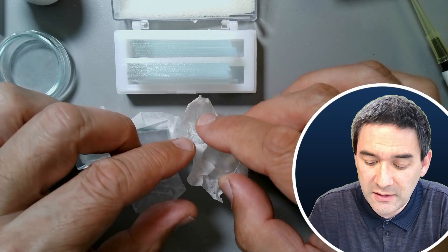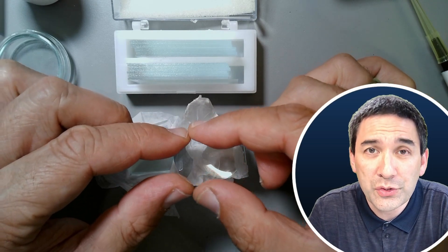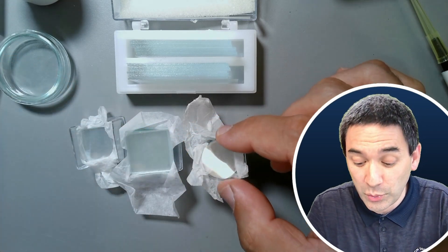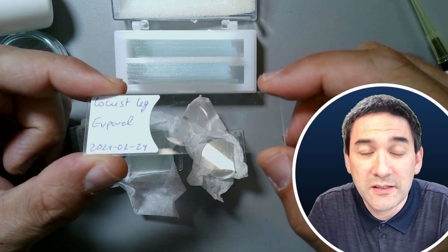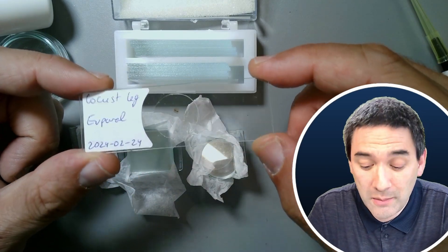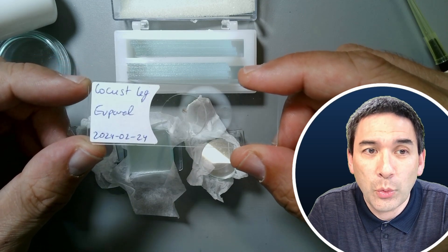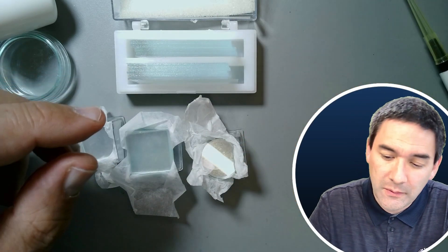But look at this one. This one is round. They are significantly more expensive. Those round cover glasses are used primarily if you want to make permanently mounted slides. I'll show you an example here. It has a round cover glass and it simply looks nicer, but the square ones also work perfectly fine. This is a locust leg, not egg, leg. Insect leg.